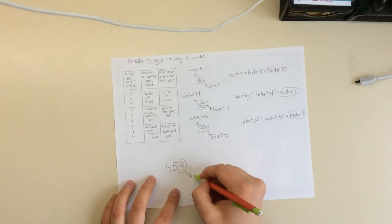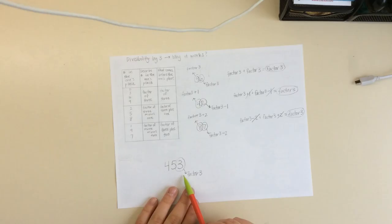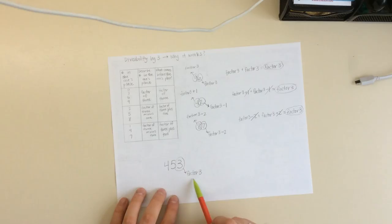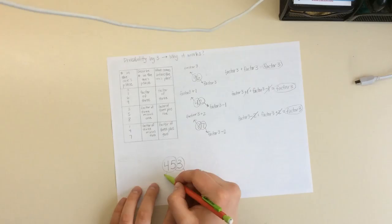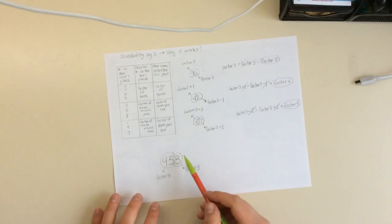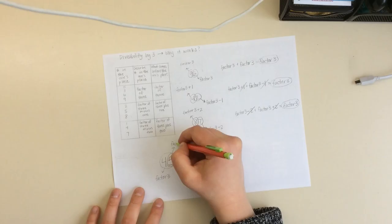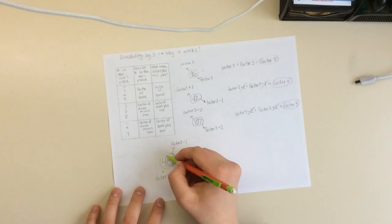Now we can do the same trick with even bigger numbers. So if we look at the number 453, we can do the same process. But now when we look to the left, we have to consider all of the digits. So if we just look at our 3 first, we know that this is a factor of 3. But then if we look to the left, we see that we have more than one digit. In order for this to work, we have to move through each place value. You're going to add each individual digit together — you wouldn't add 3 plus 45 and see if that's divisible by 3, because that's not how the trick works.